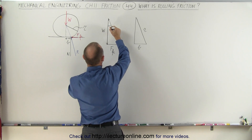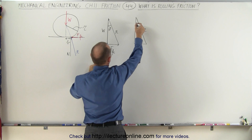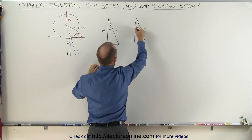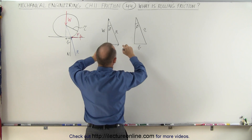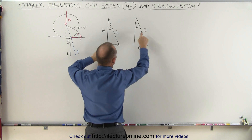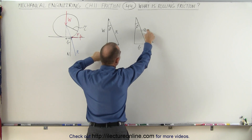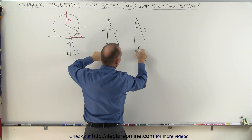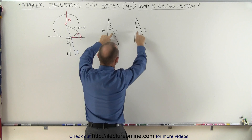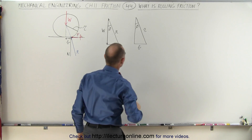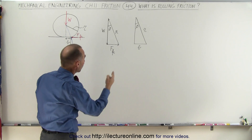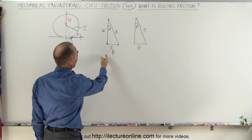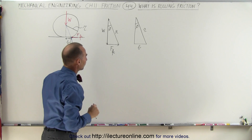We know that this angle here — let's call it angle phi. We can see the relationship between the friction force, the radius, and the coefficient of rolling friction along with the angle. Now we're going to use that to come up with an equation that describes the friction force.